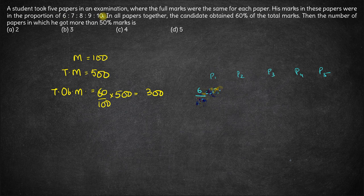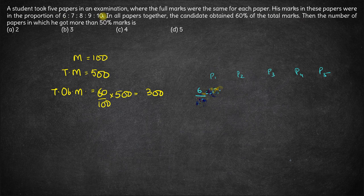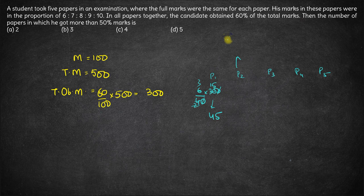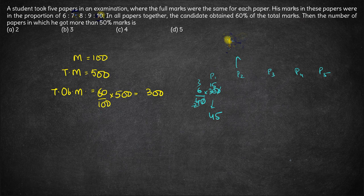So he got 45 marks in the first paper. In the second paper he would have got 7 parts out of 40, 7 by 40 into 300. So the zeros get cancelled, 7 into 30 is 210,